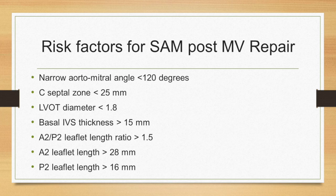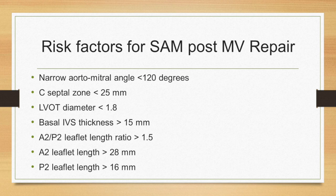Now, how do we assess if this patient is at risk for developing SAM after a repair, even if the repair was very successful and you had trace to mild MR? These are the various parameters, including the aortomitral angle of less than 120 degrees, a small LVOT diameter, large basal septal thickness, and a ratio of the anterior leaflet to the posterior leaflet greater than 1.5. There are other things, including C-septal zone, and we're going to go through each in this patient and see what we can predict.